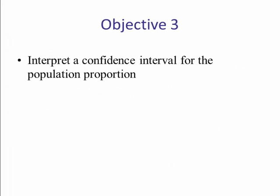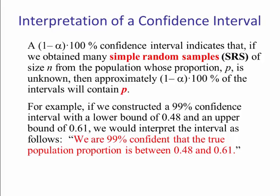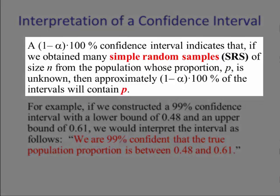Let's inject an interpretation of confidence interval. A 1 minus alpha times 100% confidence interval indicates that if we obtain many simple random samples of size n from a population whose proportion p is unknown, then approximately 1 minus alpha times 100% of the intervals will contain p.